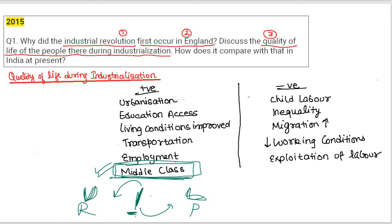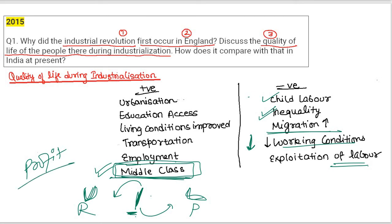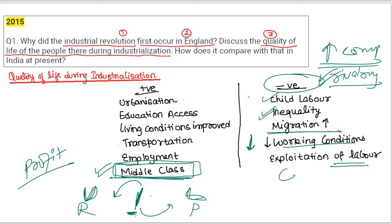On the negative side, because of increasing greed, there was child labor, inequality, and exploitation of laborers. Migration increased as people searched for jobs. Working conditions deteriorated due to the greed for more profit — wages were decreasing and people were made to work overnight for less pay. Factory owners overworked laborers and reduced wages to cut expenses. There was also rivalry between nations because of competition, and more and more colonization increased as big nations sought cheaper raw materials and better markets.